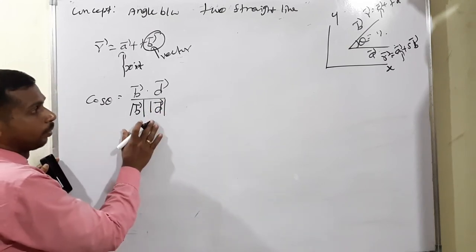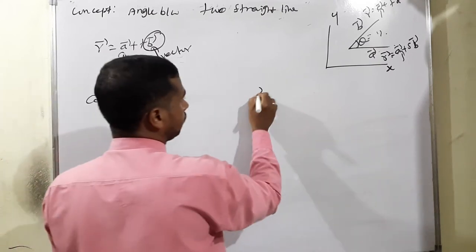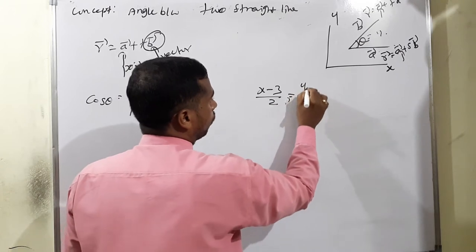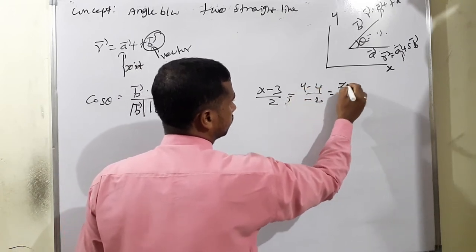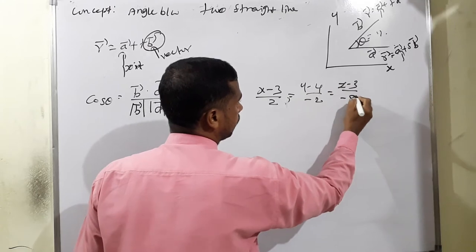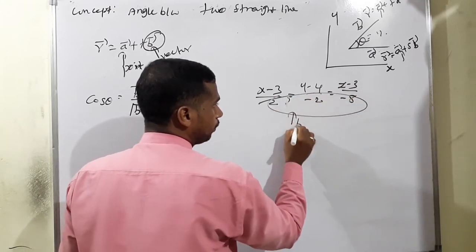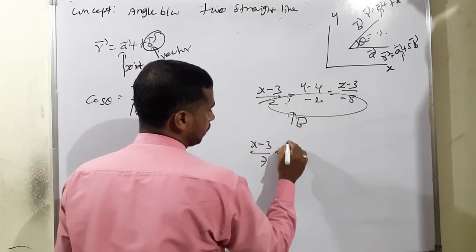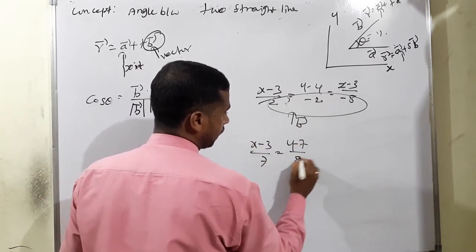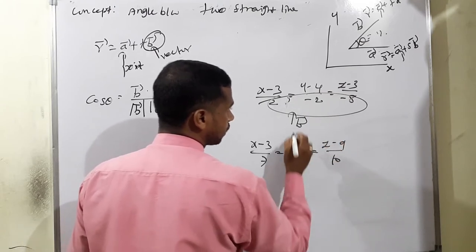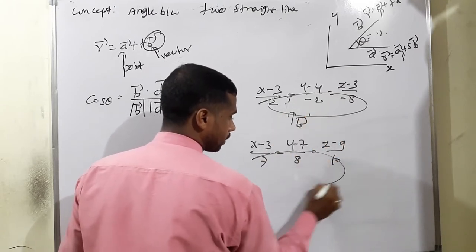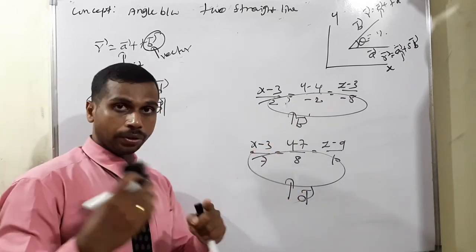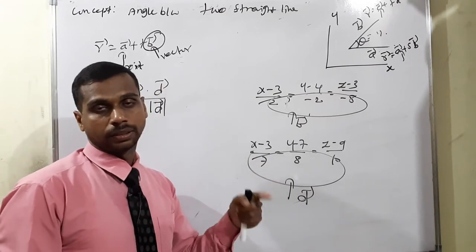From the dot product formula, a·b equals modulus of a times modulus of b times cos theta. Therefore, cos theta equals b·d divided by modulus b times modulus d. For example, in a Cartesian equation like x minus 3 by 2 equals y minus 4 by negative 2 equals z minus 3 by negative 8, the denominator part is called b vector. For another line x minus 3 by 7 equals y minus 7 by 8 equals z minus 9 by 10, the denominator is called d vector.